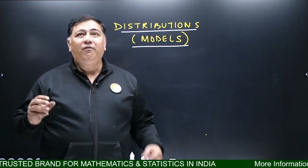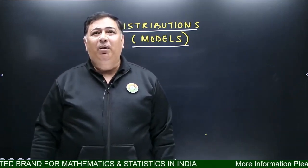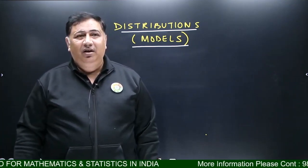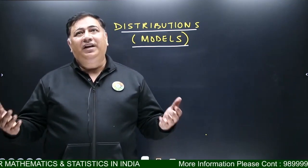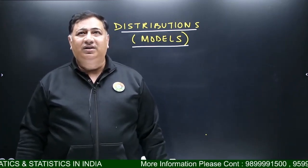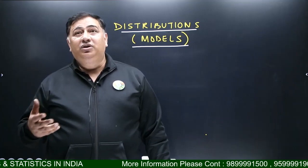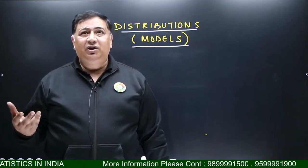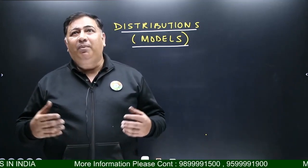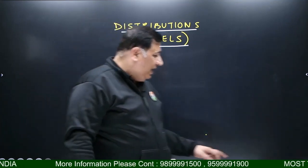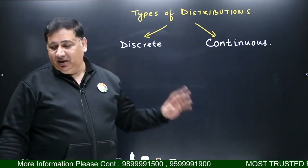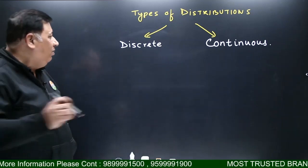We study distributions because these are formulas from which we solve our problems. You have two types of problems: arrival pattern problems, which you can count, and waiting time pattern problems, which you can measure. Problems you can count are called discrete distributions — I am talking about arrival patterns.